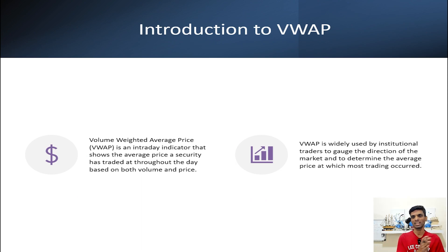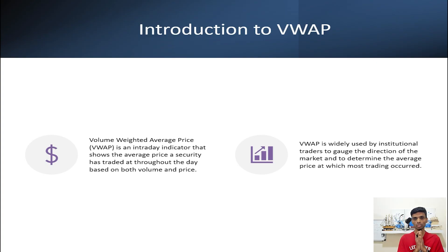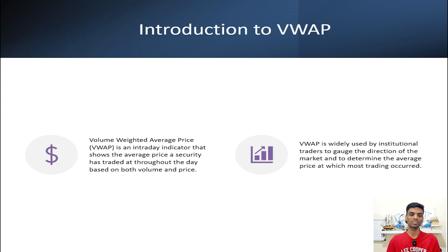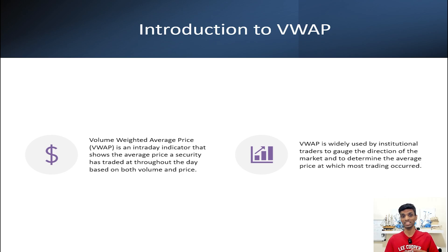So what is VWAP? In simple words, it's an indicator which uses the volume as well as the weighted average price of a stock throughout the day. The major key points in this indicator are majorly the volume and the price. This is being used majorly by institutional traders, and nowadays VWAP is very common among retail traders as well. The signals that it gives in real time are really amazing.